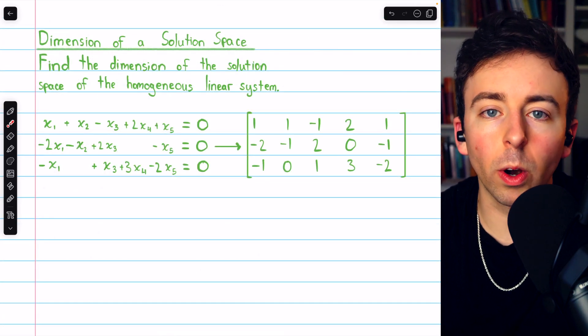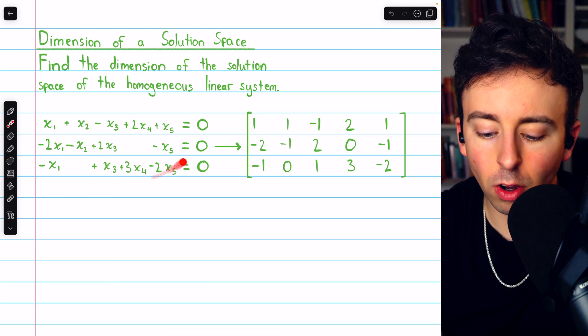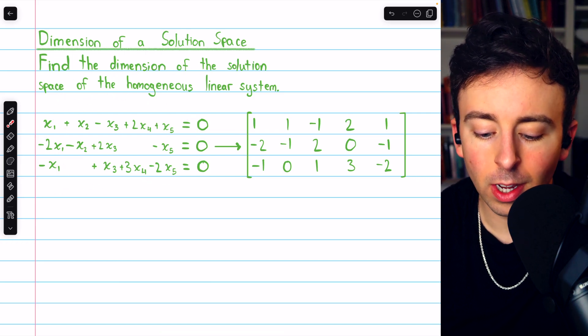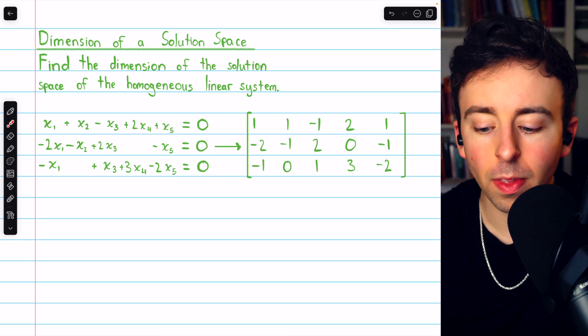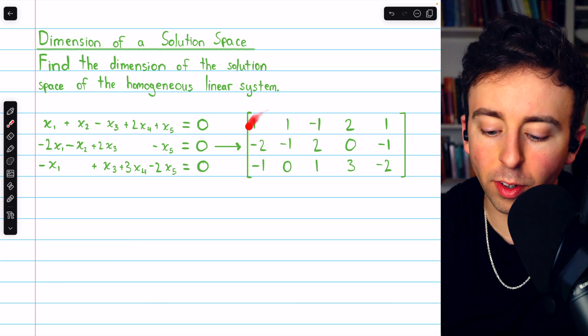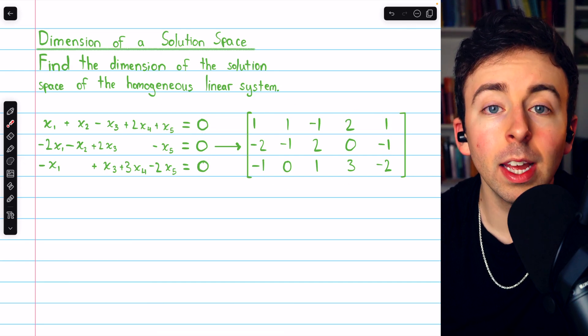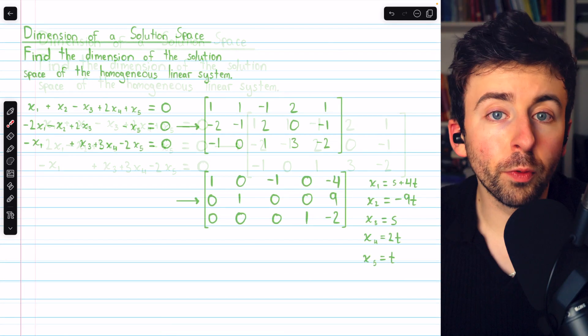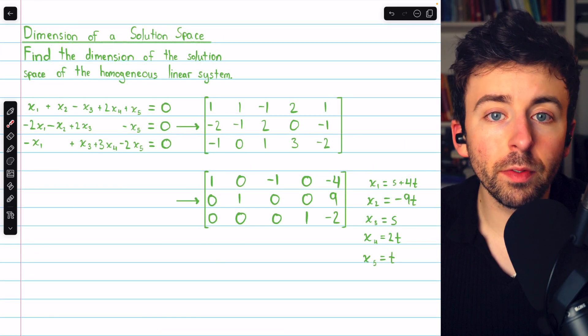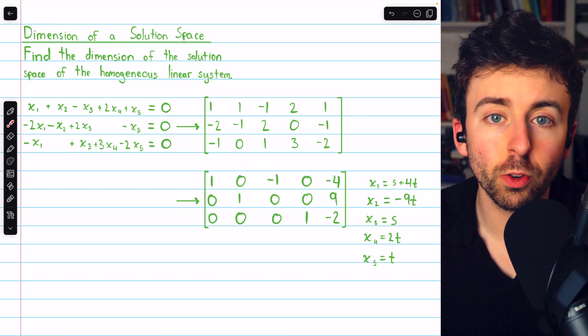Let's finish with a more involved example, where we find the dimension of the solution space of this homogeneous linear system. We have 3 equations, and we have 5 unknowns. This gives us this coefficient matrix, and we're leaving out the constants because they're all 0. Now, let's solve this system using Gauss-Jordan elimination. Performing Gauss-Jordan elimination, you can verify that we arrive at this reduced row echelon form matrix.